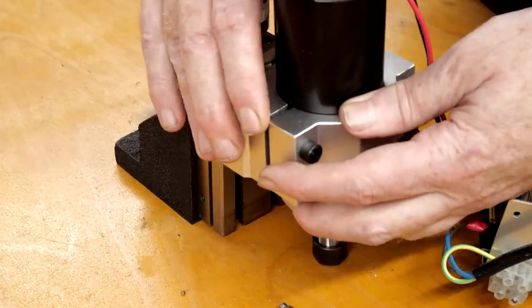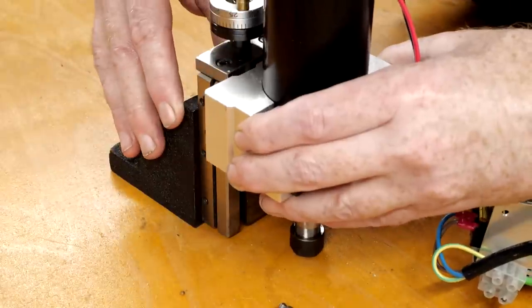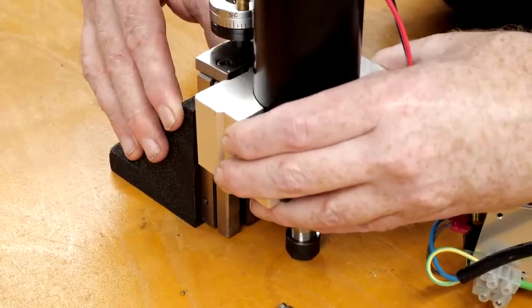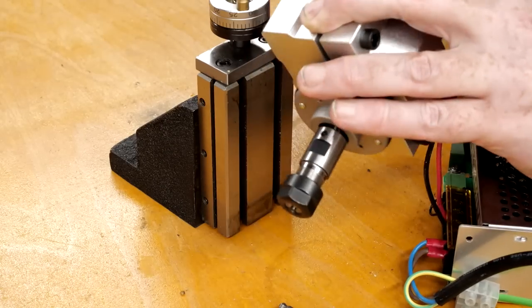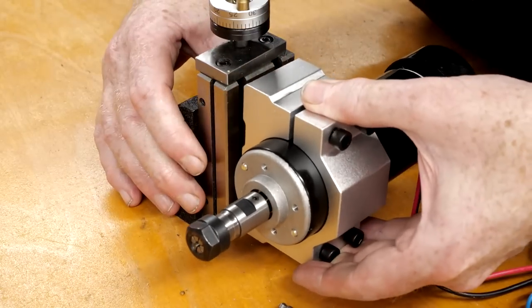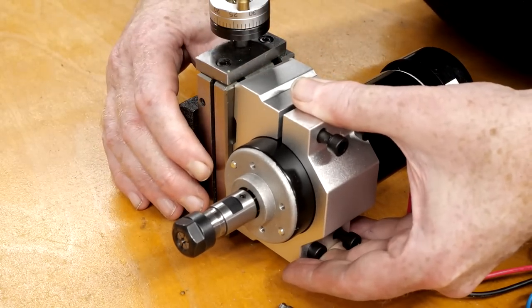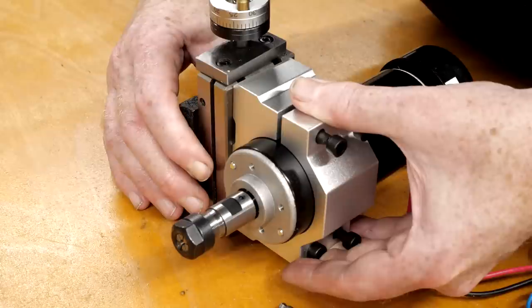I want to be able to mount the spindle vertically, but it's pretty clear the included mounting bracket won't work for this out of the box. For other projects, I'd also like to be able to mount it horizontally. For this, the mounting bracket is better suited, but still has a couple of issues.